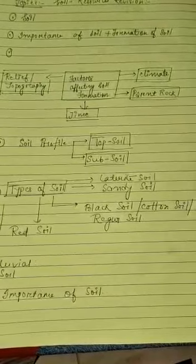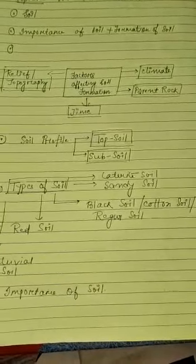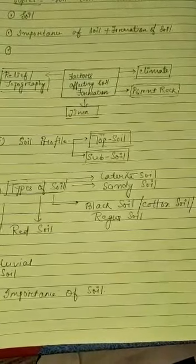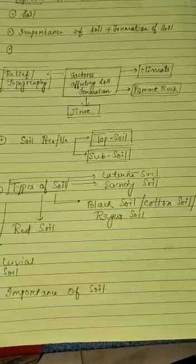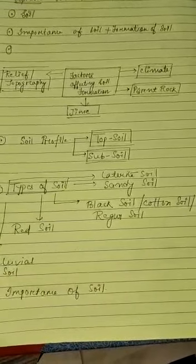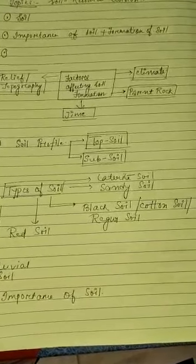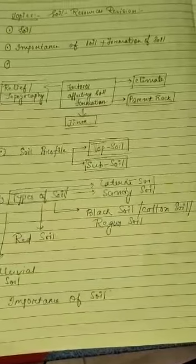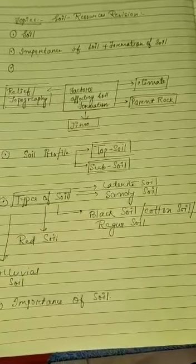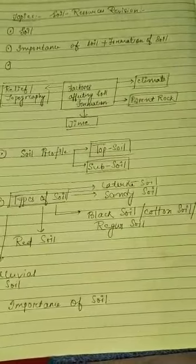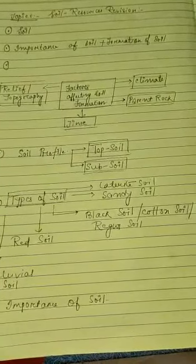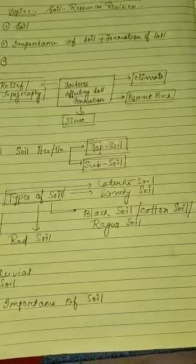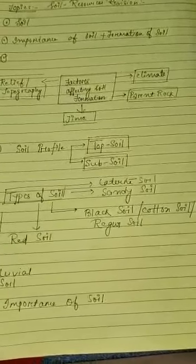Next is formation of soil. Please go to the book to see what factors help in soil formation. In short, climate, parent rock, time, and relief or topography help in soil formation. Climate helps in soil formation — the type of climate present in a particular area determines the type of soil found there.